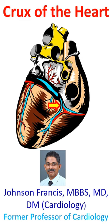The coronary artery which crosses the crux is termed the dominant coronary artery. In most cases, it is the right coronary artery which is dominant. It may be noted that regardless of this dominance, it is usually the left coronary artery which supplies the major part of the heart muscle.